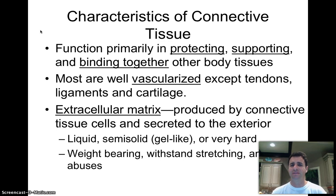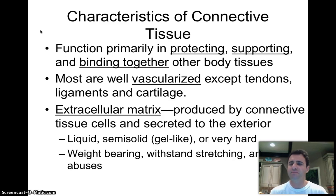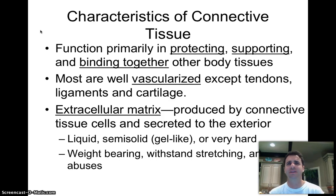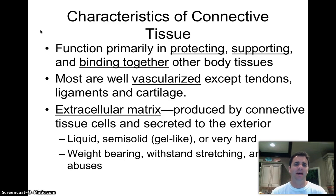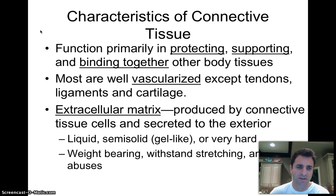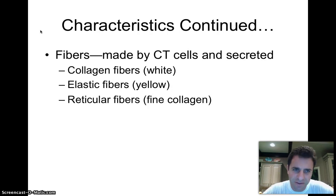Connective tissue incorporates the extracellular matrix — all the various carbohydrates and proteins found between cells, on the outside of the cells. They're produced by connective tissue cells and secreted to the exterior. You'll hear things mentioned like ground substance or collagen fibers — these are fibers created by cells, but the cells may be very far apart with lots and lots of fibers or extracellular matrix. It can be liquid, gel-like, or very hard. It can also be weight-bearing and withstand stretching.